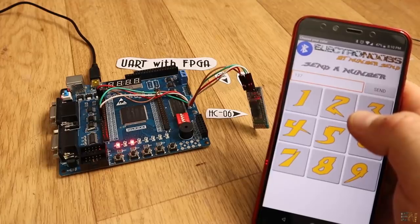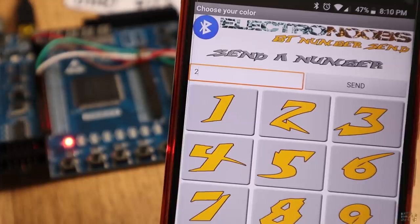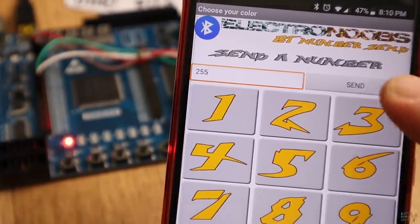Now as you can see, each time I send the number, I get the binary value on the LEDs. Since I have 8 LEDs, I could send up to 255.